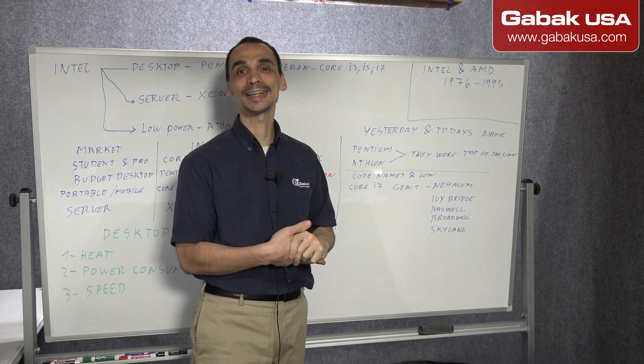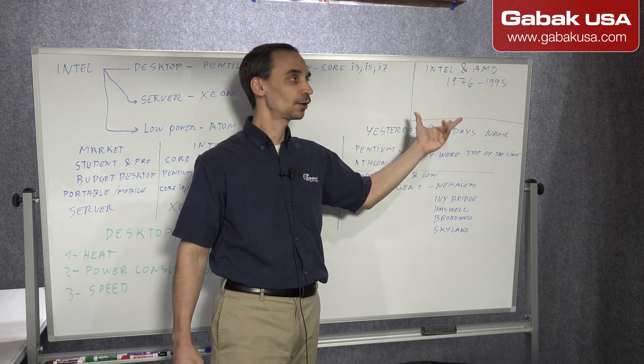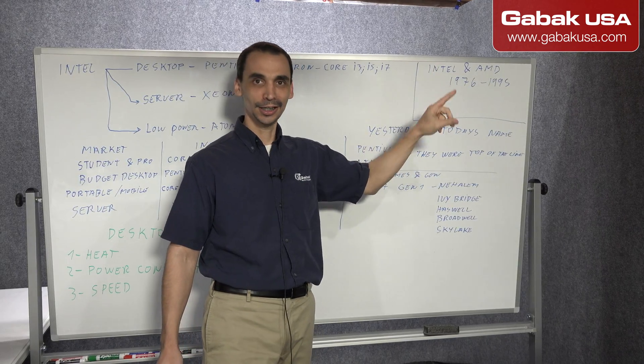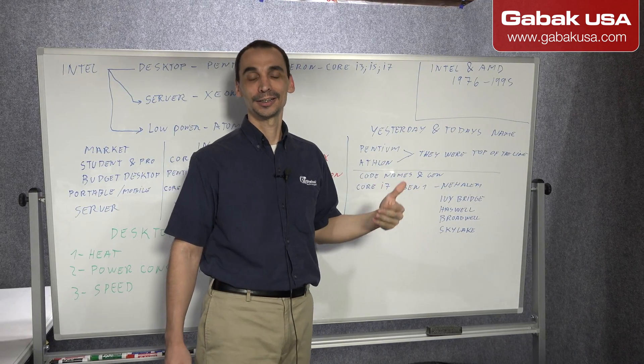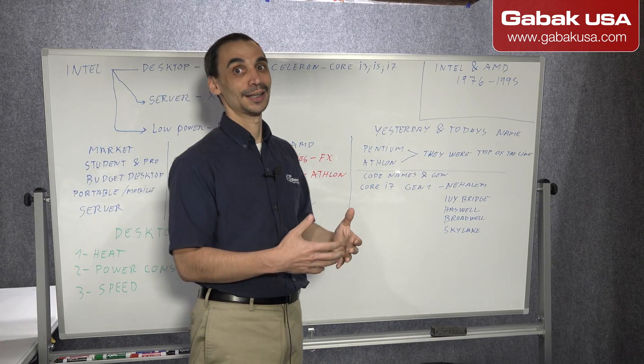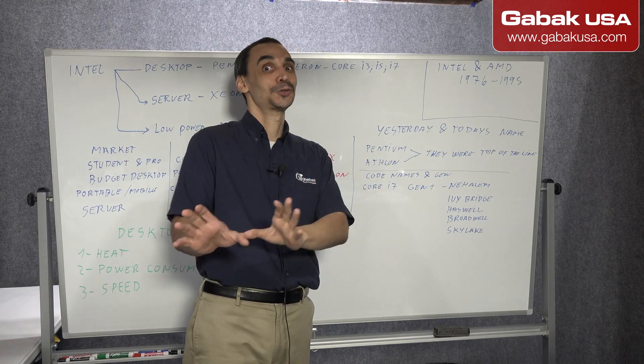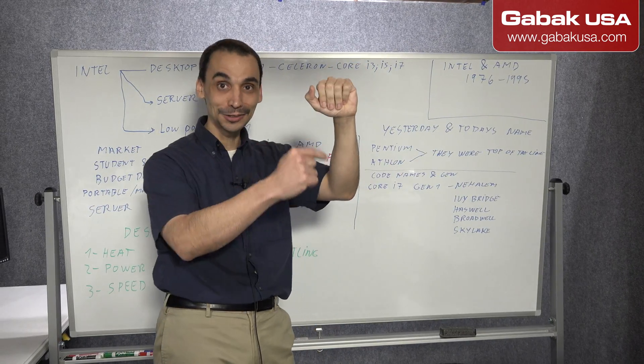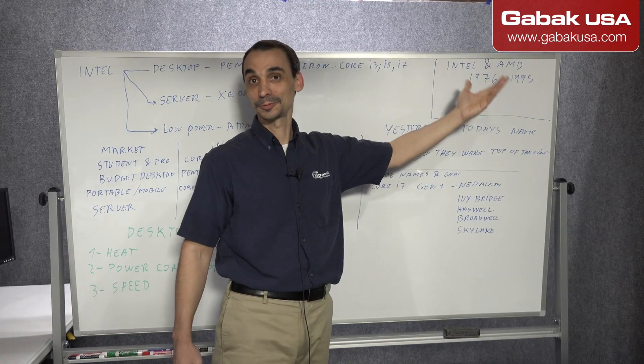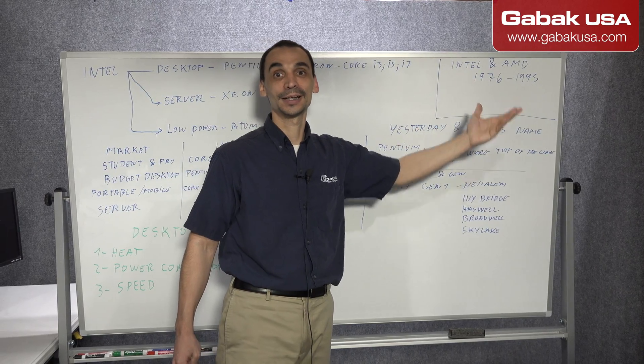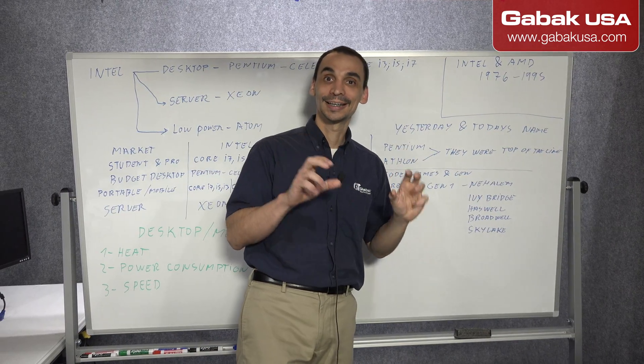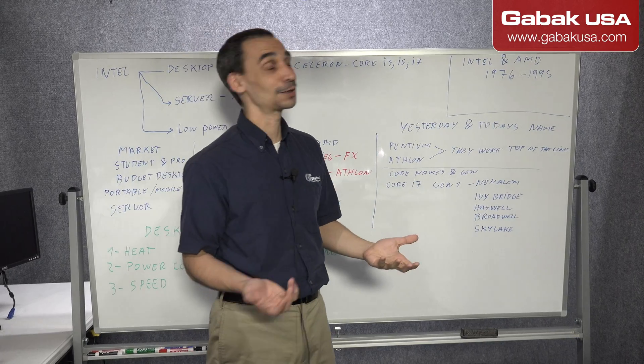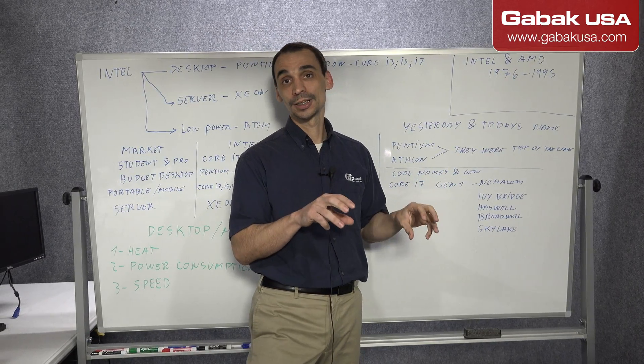So when the time comes by, a few years later, they start saying okay, AMD, you cannot make more CPUs the way that we do it. You have to do your own. But AMD said, here is the agreement. You see? You signed it. So we have the rights to make the processor. So the processors were exactly the same or very similar. At least the socket was the same.